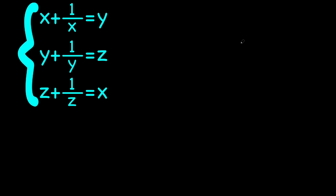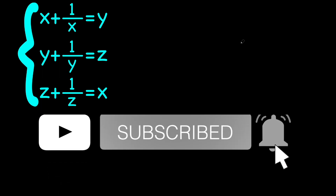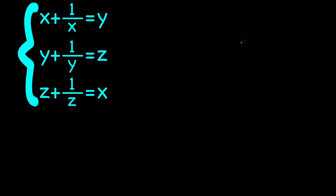Hey there folks. In this video we're going to be trying to solve this interesting system of equations where we have x plus 1 over x equals y, y plus 1 over y equals z, and z plus 1 over z equals x. We're supposed to solve for x, y, and z. Let's start with the fact that x, y, and z cannot equal 0 because all of them are in the denominators.